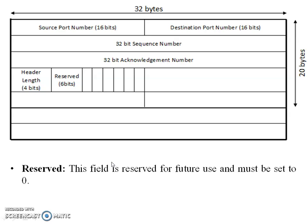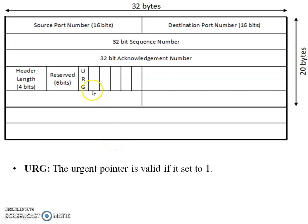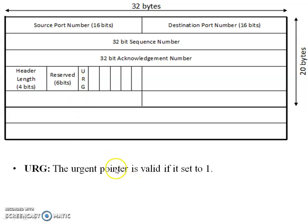Next is the URG flag, which is the urgent pointer flag. It is one kind of flag — whenever urgent data will be sent by the sender, it is set to one; otherwise it is zero.